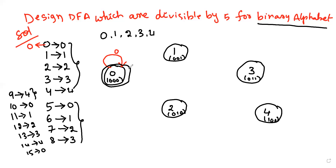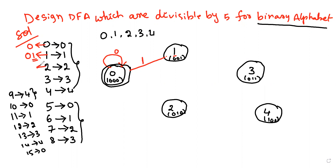The next value is 1. The binary value for 1 is just 1, so this maps to state 1. The next value is 2; the binary value for 2 is 10.